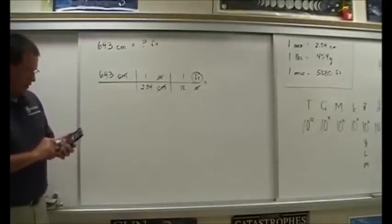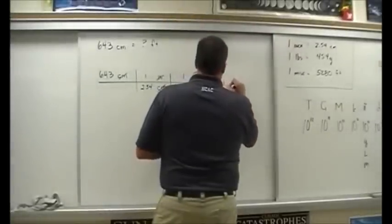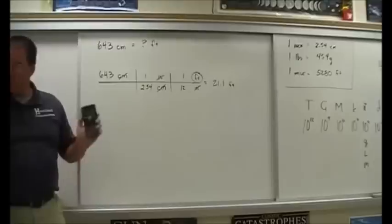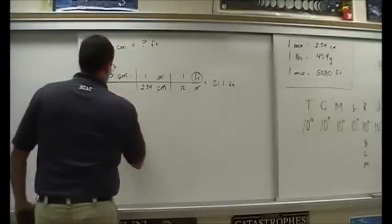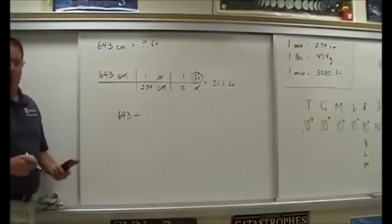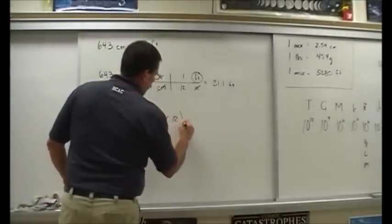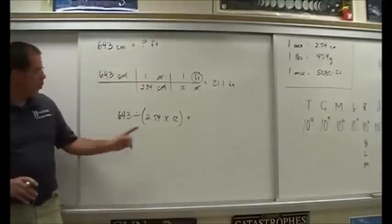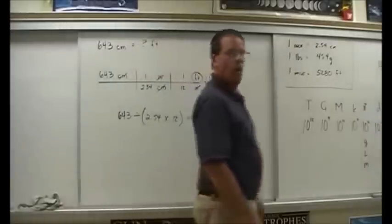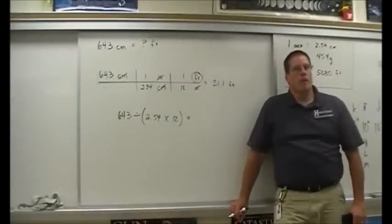And hopefully you guys are getting around 21.1. My calculator says 21.09580052. The way I put this in on my calculator: 643 times 1 times 1, divided by — open the parentheses — 2.54 times 12, close the parentheses, equals. Can anybody tell me why I'm using the parentheses? You have to multiply first — so the calculator multiplies those two together first.